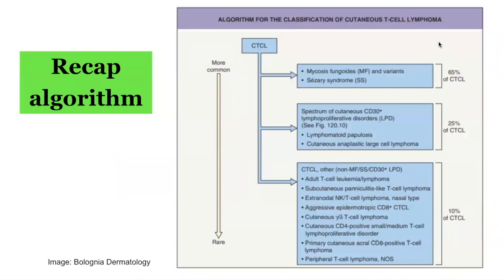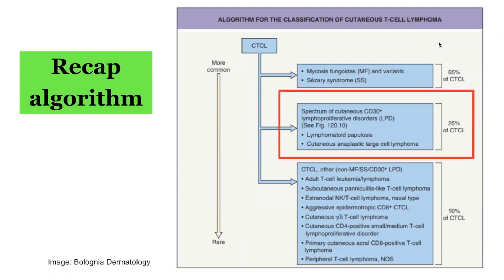To recap our algorithm when considering cutaneous T-cell lymphomas, we generally categorize them into three broad groups. The first group comprises mycosis fungoides and Sézary syndrome, which makes up 65% of all cutaneous T-cell lymphomas. The next group, the focus of today's presentation, is the spectrum of cutaneous CD30 positive lymphoproliferative disorders, comprising lymphomatoid papulosis as well as cutaneous anaplastic large cell lymphoma.